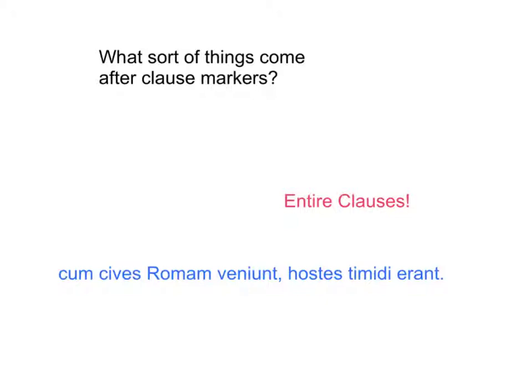If I were going to bracket and label this sentence, I would do the following: cum — venient — subject, verb, not a dative — Romam, not a dative — subject, verb — timidi, subject complement. So it's a linking kernel, but there we have it. This must mean 'when.'